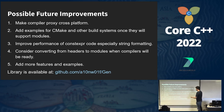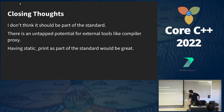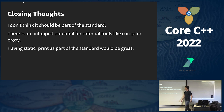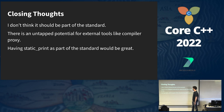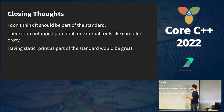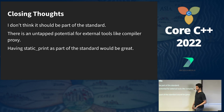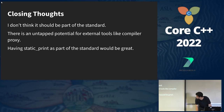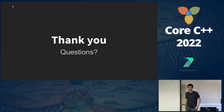The example, the compiler proxy, and the gen library are all available at the GitHub link shown. Some closing thoughts: I don't think this approach should be part of the standard, but I do think there is strong potential for external tools like compiler proxy. Having static_print as part of the standard would be great, both for debugging compile-time code and as a way to communicate with users of compile-time libraries. Thank you, and if you have questions you can ask them now or later.